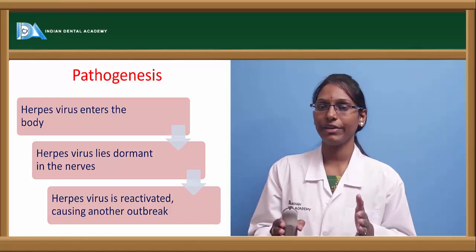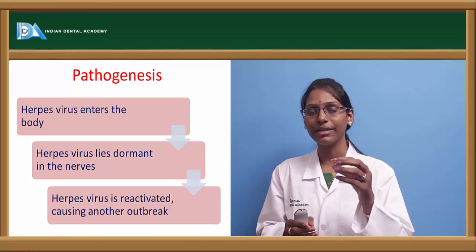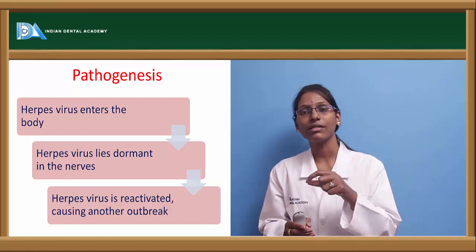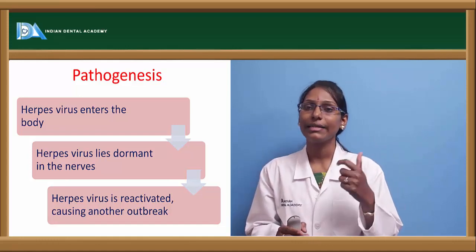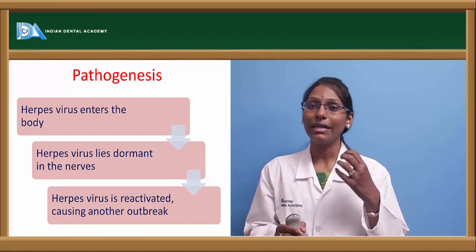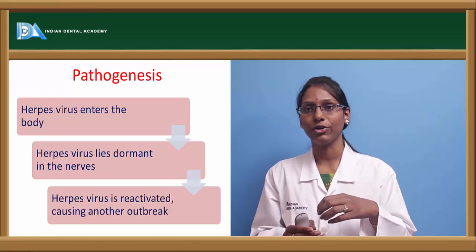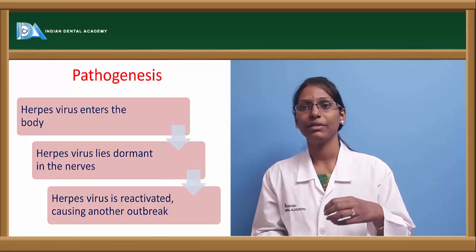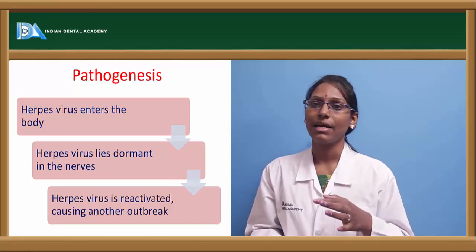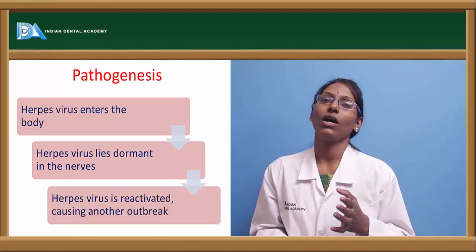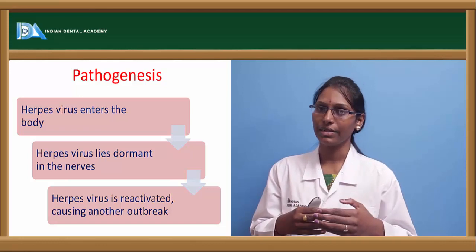During the stage of primary infection, the virus travels along the sensory neural axon and then remains latent within the ganglion — for example, the trigeminal ganglia — establishing a chronic or latent infection within that region.